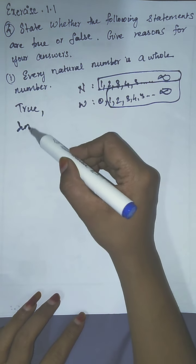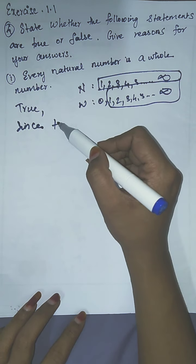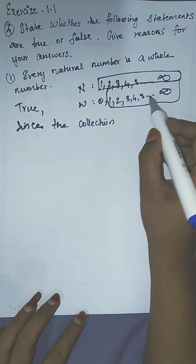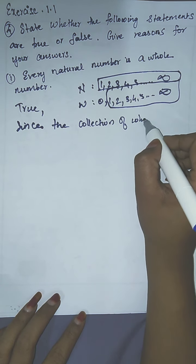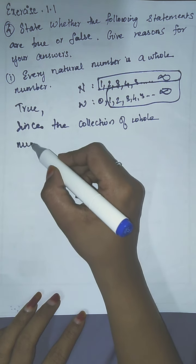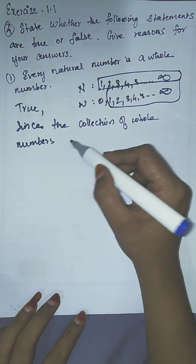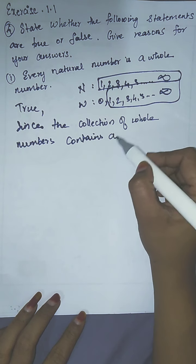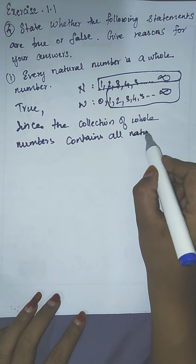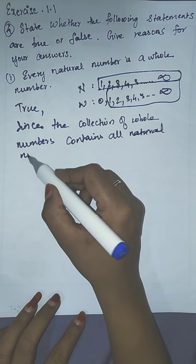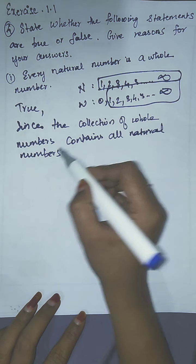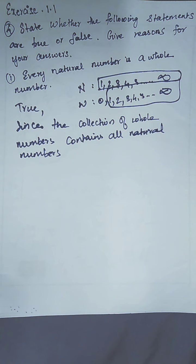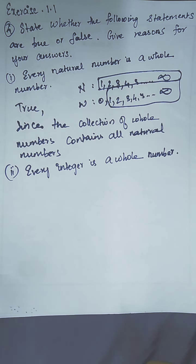The reason is: since the collection of whole numbers contains all natural numbers. The whole numbers contain all the natural numbers, so the given statement is true.